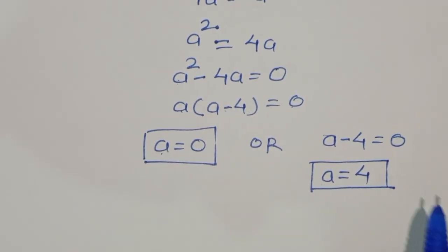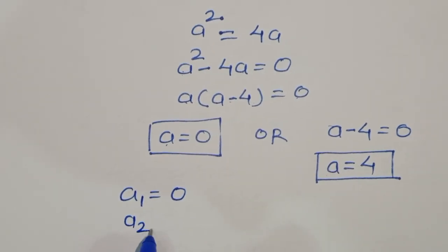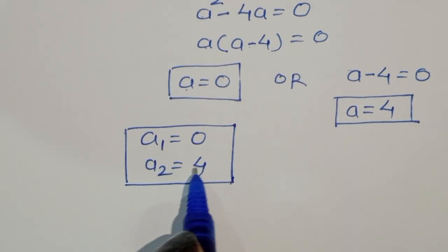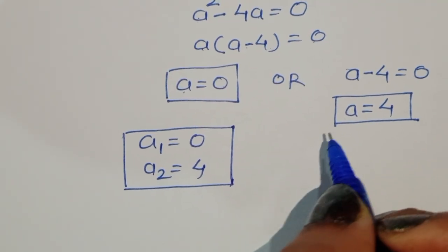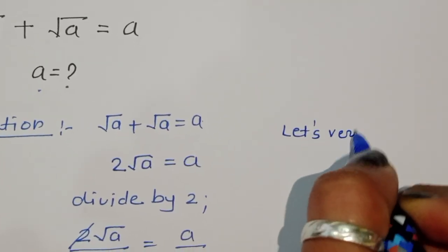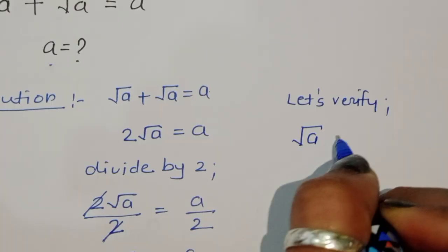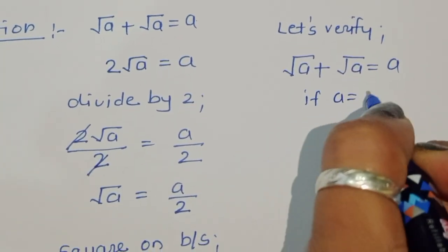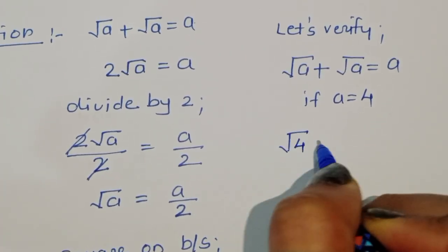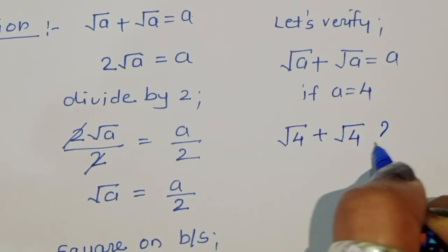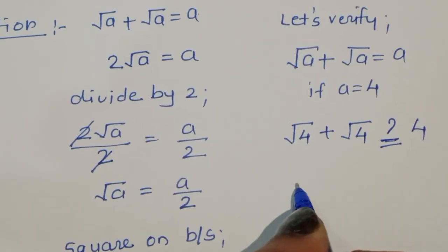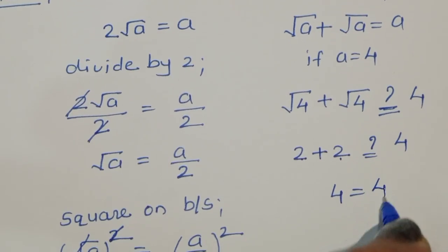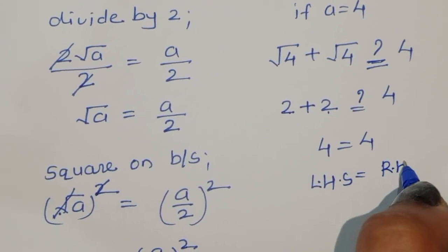From a minus 4 equals 0 we get a equals 4. So we have two values: a₁ equals 0 and a₂ equals 4. Now let's verify whether these are correct by substituting a₂ equals 4 into the original equation: square root of 4 plus square root of 4 equals 4? That gives 2 plus 2 equals 4, which is 4 equals 4.